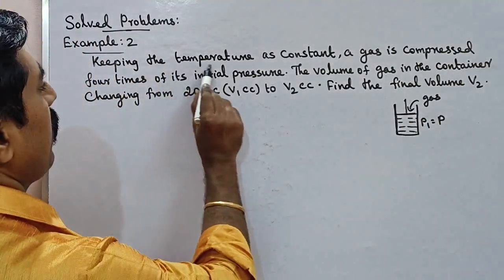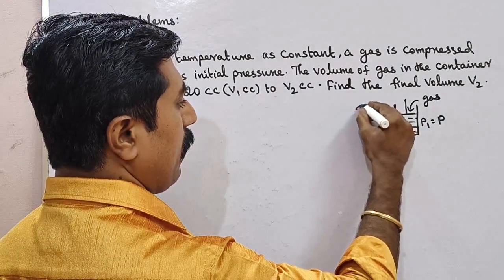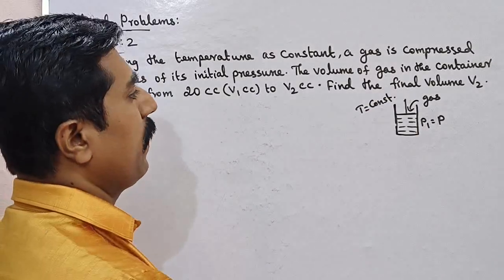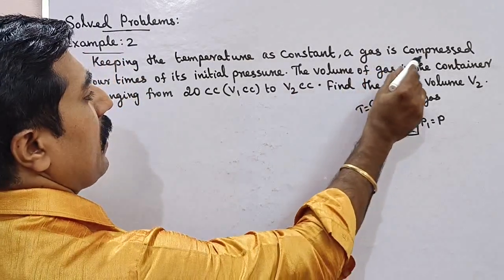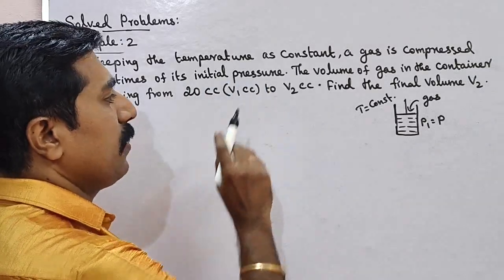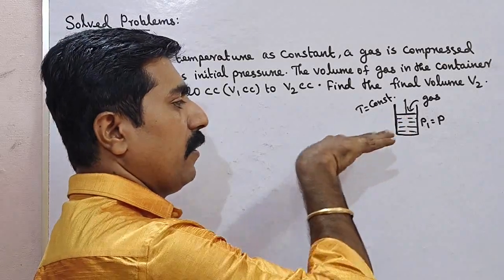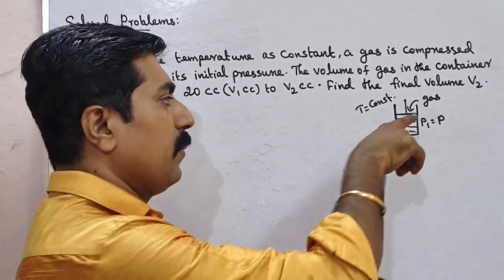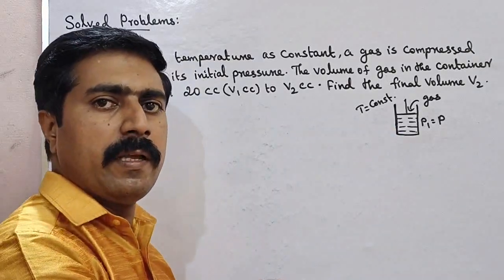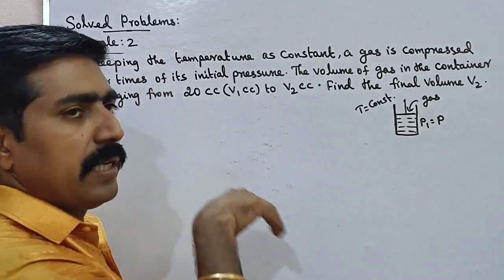The temperature of the gas is constant. The gas is compressed four times of its initial pressure. When you press the piston, the gas is compressed — four times of your initial pressure.